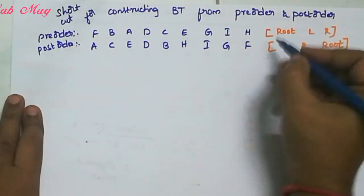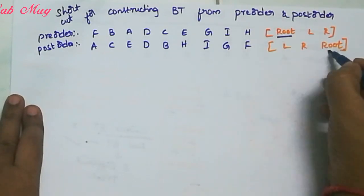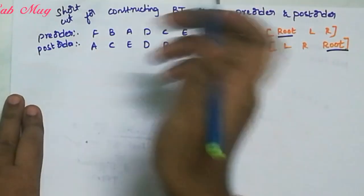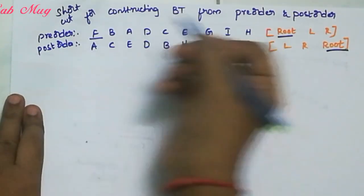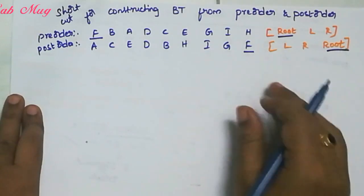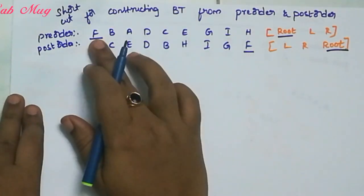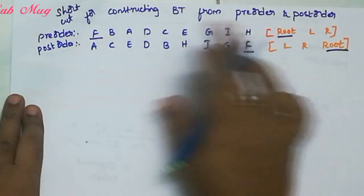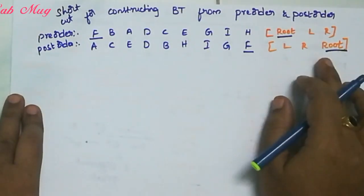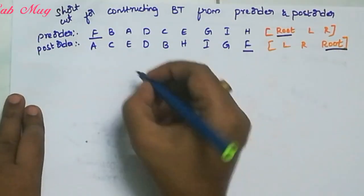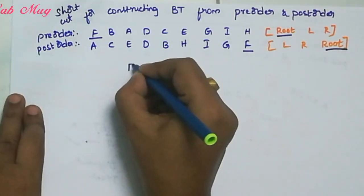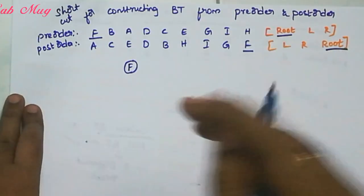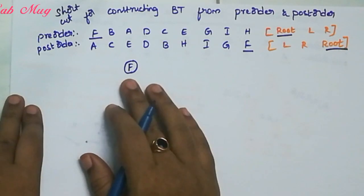Root ane adhi eppudu pre-order lo first element ga untundi, and post-order lo last element ga untundi. Here the element is F. So F ane adhi pre-order lo first root element, and post-order lo F ane adhi last root element. So F is the root element.